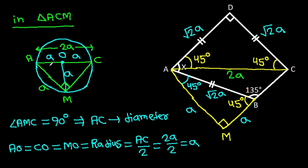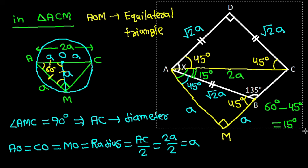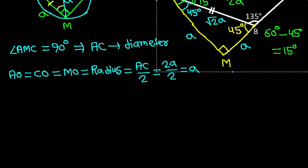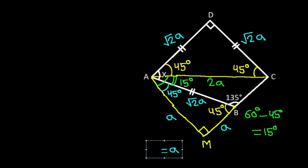Now AO is a, AM is a, and OM is a. So triangle AOM is an equilateral triangle, meaning all its angles are 60 degrees. The angle at O is 60 degrees, so angle MAC equals 60 degrees minus 45 degrees, which equals 15 degrees.